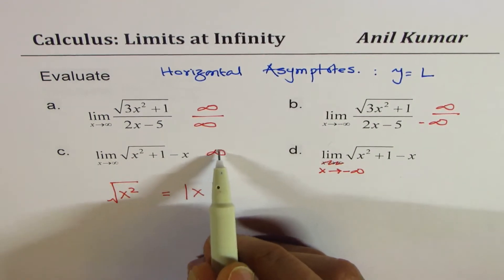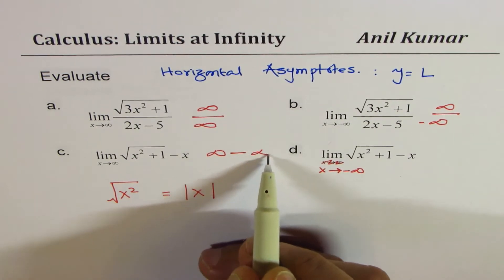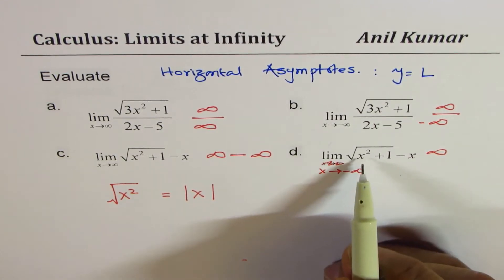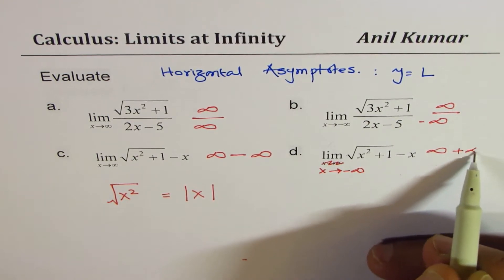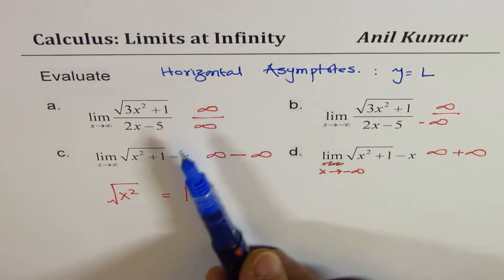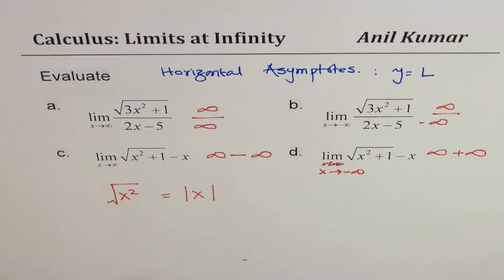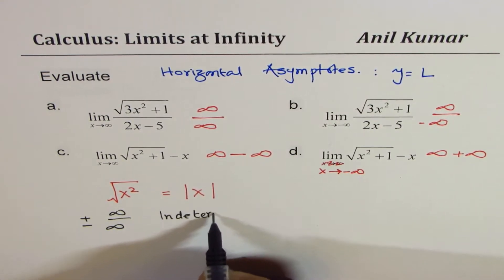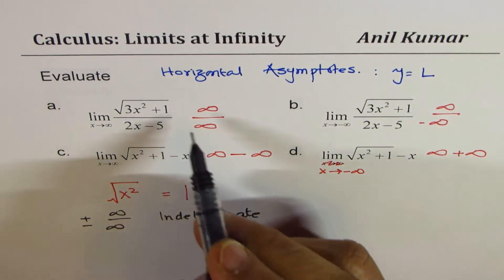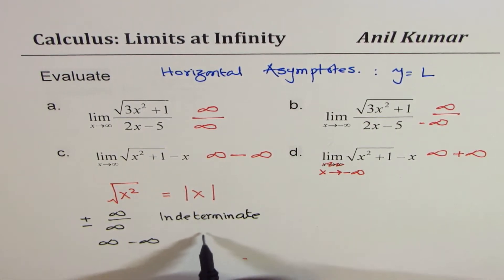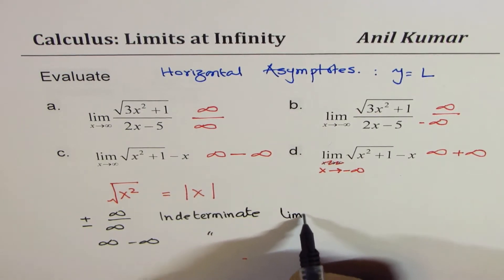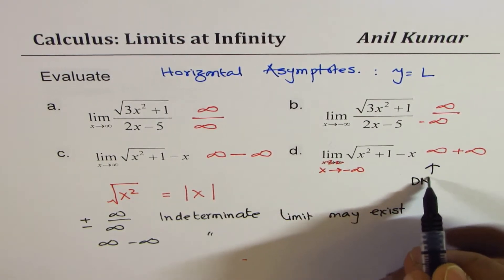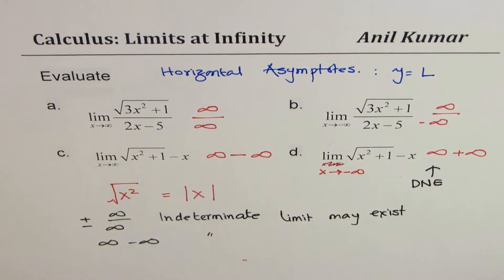In Example C we are doing subtraction — an infinitely large number take away another infinitely large number. In Example D, if we put a negative number, the square root is always positive, so that value becomes positive. So we're dealing with three different indeterminate cases: infinity over infinity and infinity minus infinity. We cannot directly calculate these values — the limit may or may not exist.